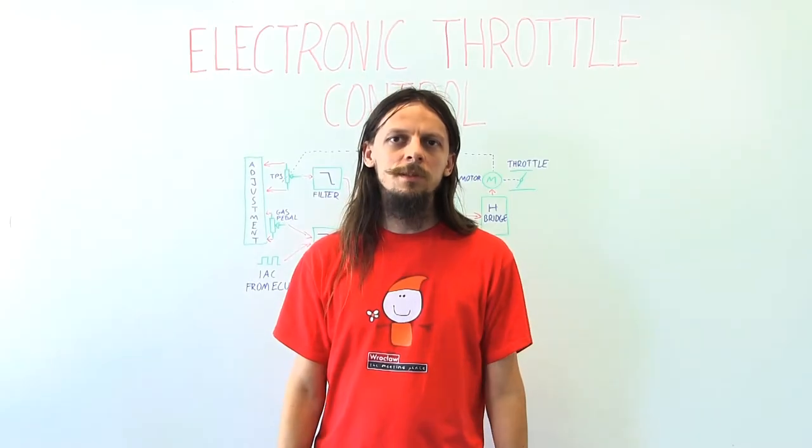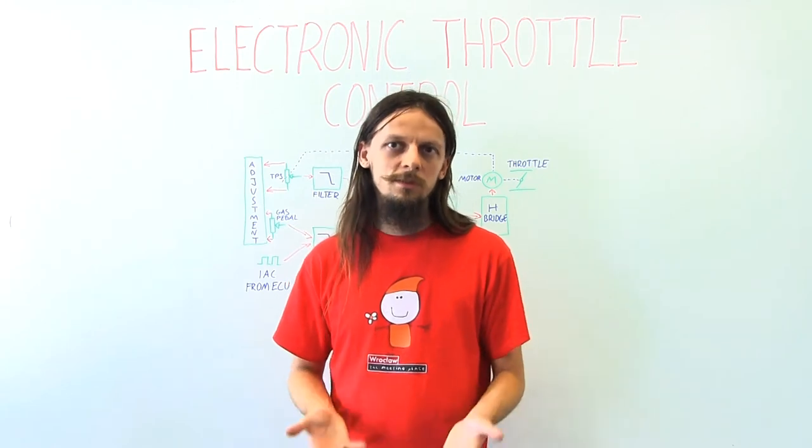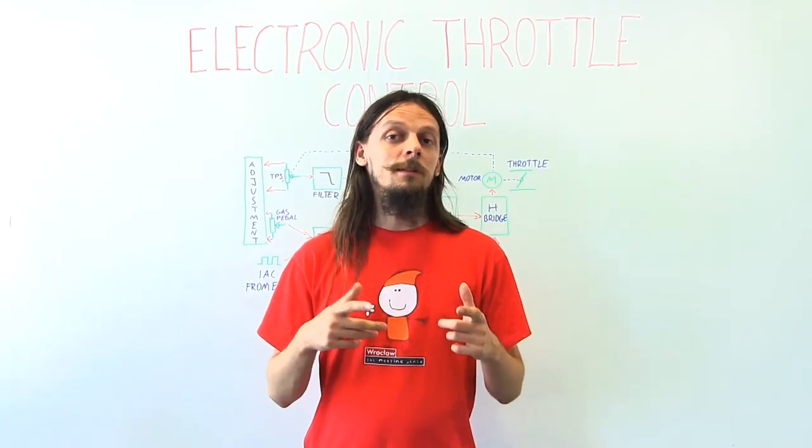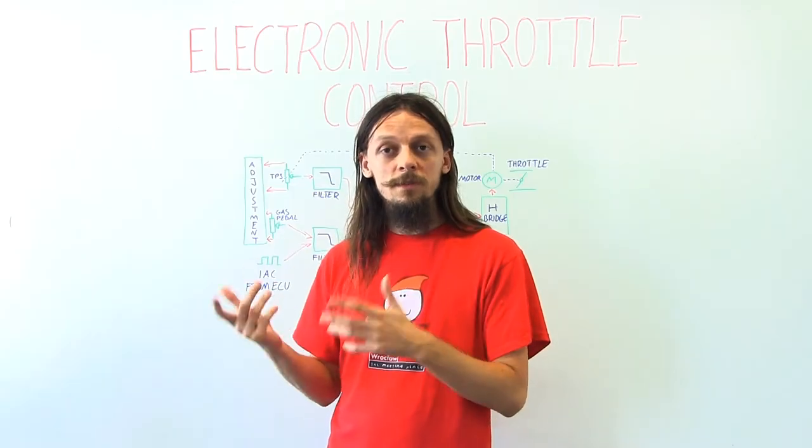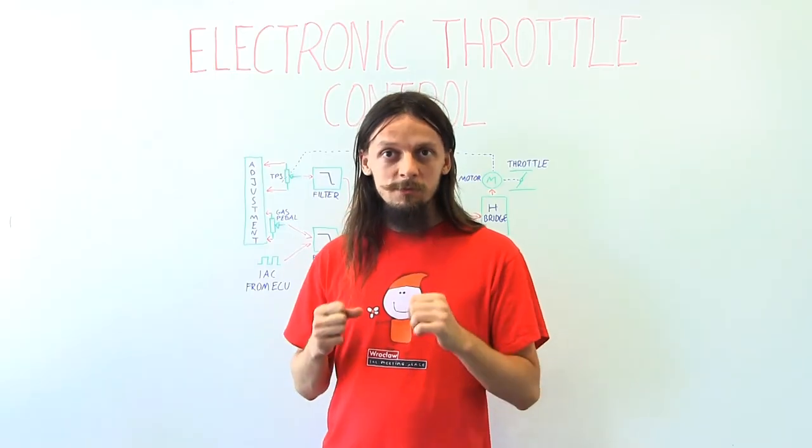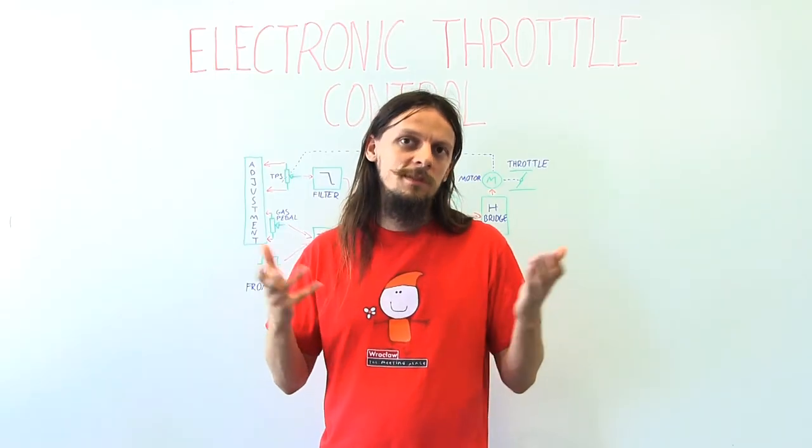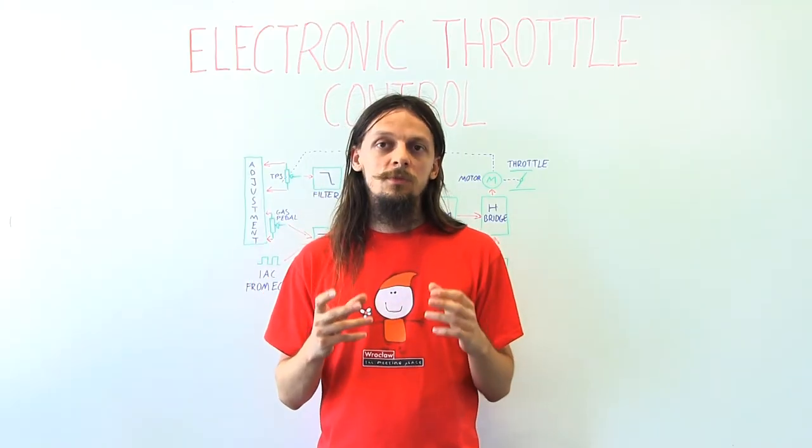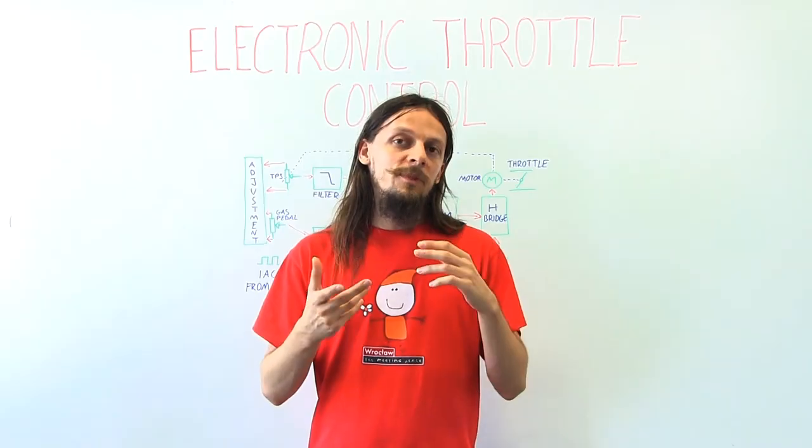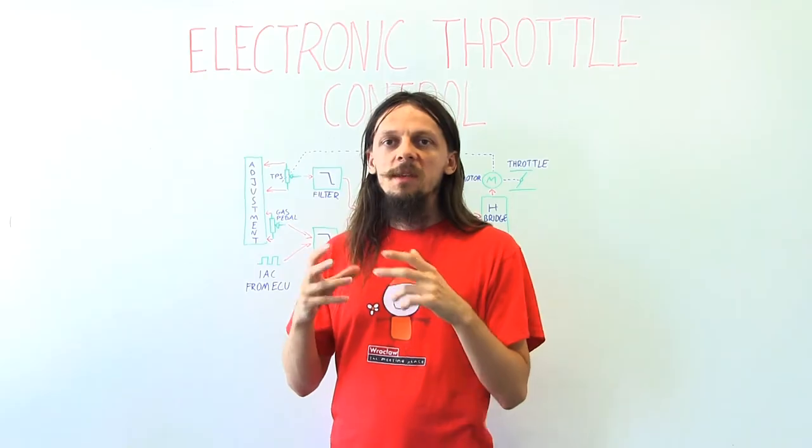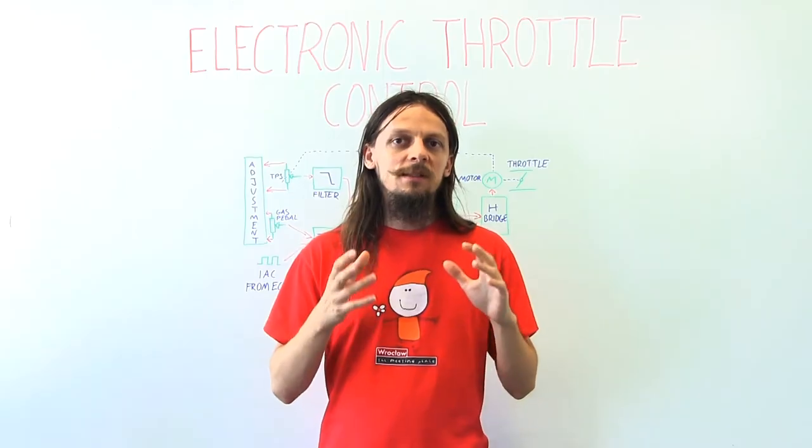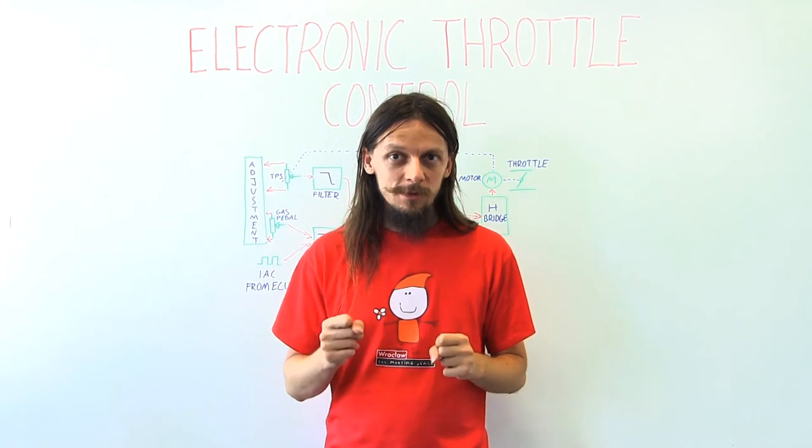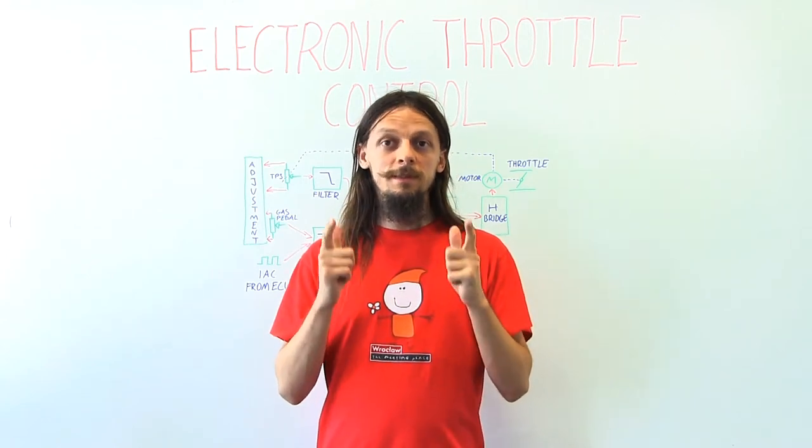When you've got the vehicle that is already equipped with the electronic throttle, then of course the ECU will control that. But for my Seicento, when I'm changing the engine, the engine itself is actually equipped with the electronic throttle, but the car doesn't handle that. I've decided to, instead of gluing some classic mechanical throttle to the engine, build my own controller for the throttle.